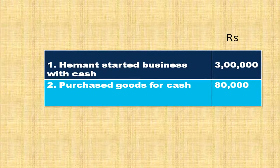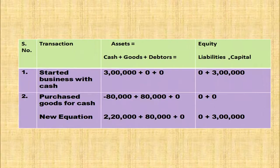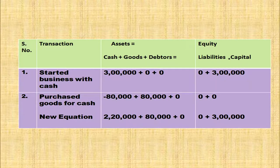Here are some more transactions. First transaction: Heyman started business with cash rupees 3,00,000. Second transaction: purchase goods for cash rupees 80,000. When business is started, cash increases and capital increases — cash column 3,00,000 and capital 3,00,000. When goods are purchased for cash, goods column increases by 80,000 and cash column is deducted 80,000. New accounting equation: cash 2,20,000 plus goods 80,000 equals liability 0 plus capital 3,00,000.